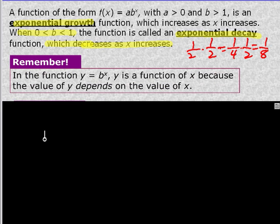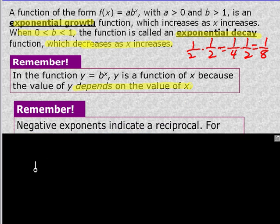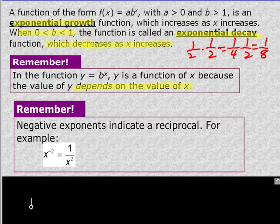Remember in the function y = b^x, y is a function of x still because the value of y depends on the value of x. And negative exponents indicate a reciprocal. So x^(-2) is actually 1 over x squared. Something that we learned at the beginning of the year we might have forgotten.